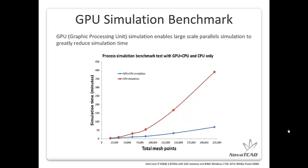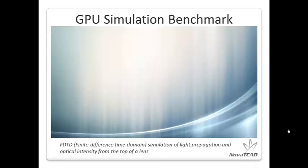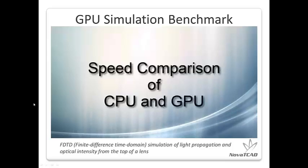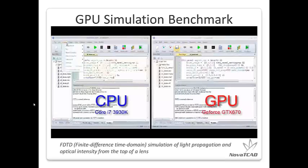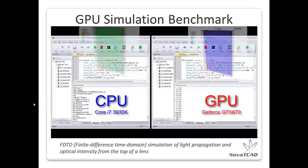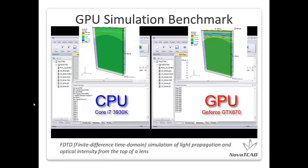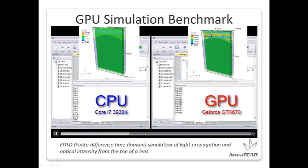For example, during the diffusion step — the most time-consuming step of a process simulation — GPU simulation only takes one eighth of the time of a CPU simulation at 220,000 mesh points. This slide includes a short movie showing how fast GPU simulation can be compared to CPU simulation during a finite difference time domain simulation. Light propagates with a certain optical intensity from the top of the lens, and we can clearly see how fast GPU is compared to the CPU.